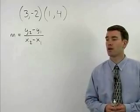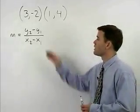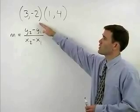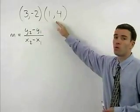In this problem, we're asked to find the slope of the line that passes through the points 3, negative 2, and 1, 4.